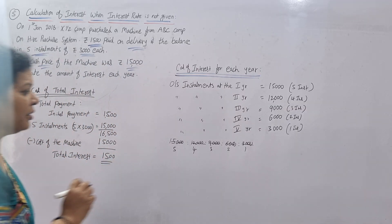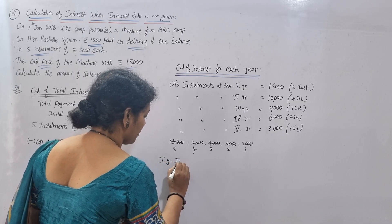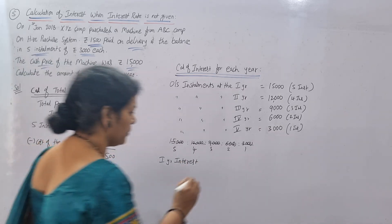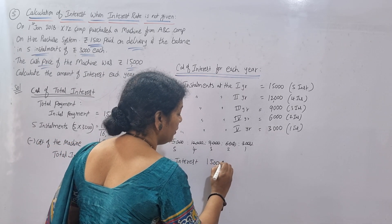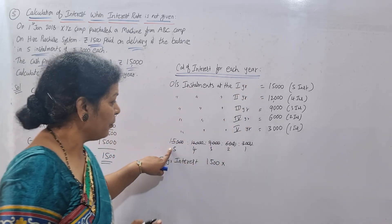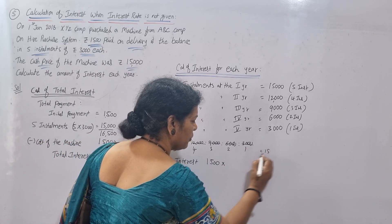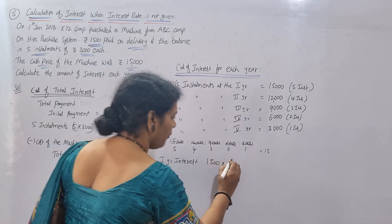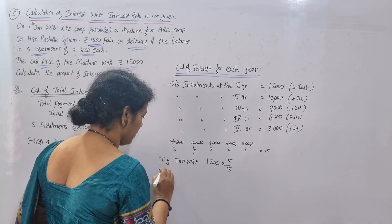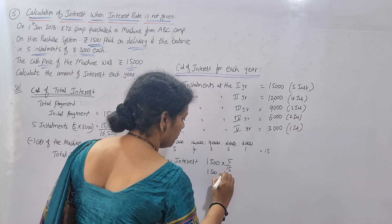Now using this ratio, we can calculate interest for each year. The total interest is ₹1,500. For Year 1, interest = ₹1,500 × 5/15. For Year 2, interest = ₹1,500 × 4/15.